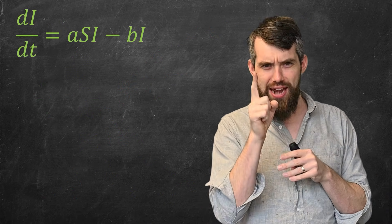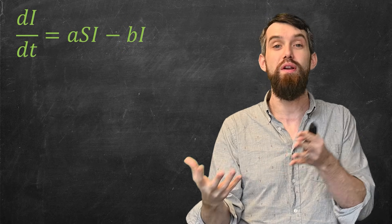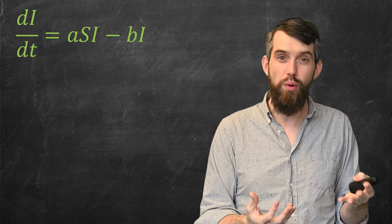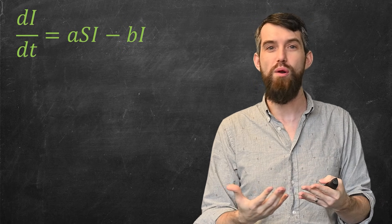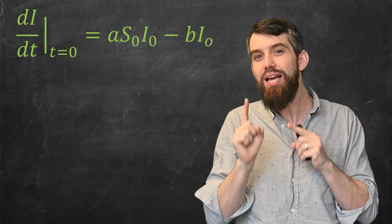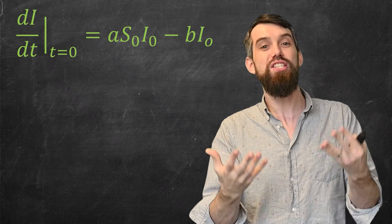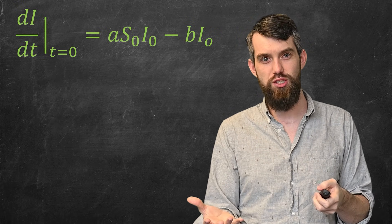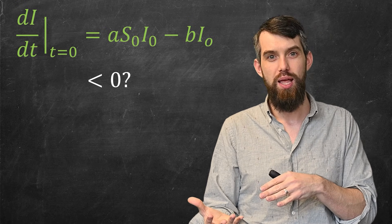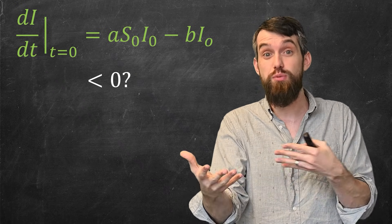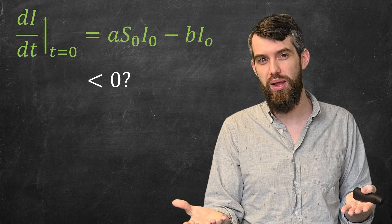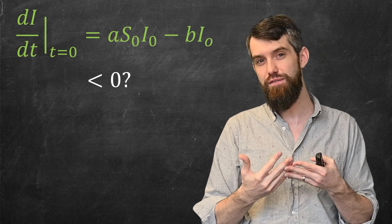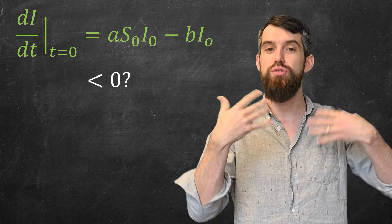Let me zoom in on the interesting equation: dI/dt = a·S·I − b·I. If I think about whether there's going to be an epidemic or not, I look right at the beginning, before the number of infected people skyrockets. Plugging in t = 0, where S becomes S₀ and I becomes I₀, the big question is whether this rate of change is less than or greater than zero. If dI/dt > 0, the number of infected people is increasing — I'm going to have an epidemic. If dI/dt < 0, then infected people leave that status faster than new people are gained, it dies out, and you don't have an epidemic. Canceling I₀ from both terms, this reduces to asking: is a·S₀ − b less than zero, or equivalently, is a·S₀/b less than one?